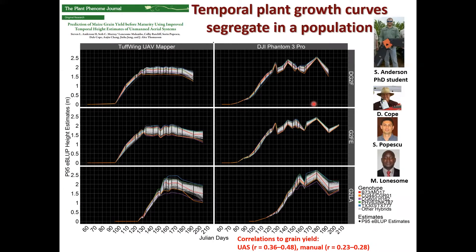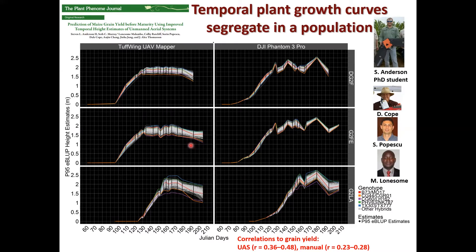Our earliest work in this area was to model plant height. What I'm showing you here is the Genomes to Fields program over three different trials — a dry land, an optimal, and a late planting — and two different vehicles: a fixed-wing aircraft and a DJI Phantom 3 Pro. What was really important is we were able to measure plant height temporally. Previously, we could only measure at the end of the season, and we noticed the lines that were tallest at the end weren't necessarily tallest earlier, leading to additional phenotypic features for our selection program. Our correlation to grain yield using the UAS tool was much higher than traditional manual measurement because we had these temporal features throughout the season.